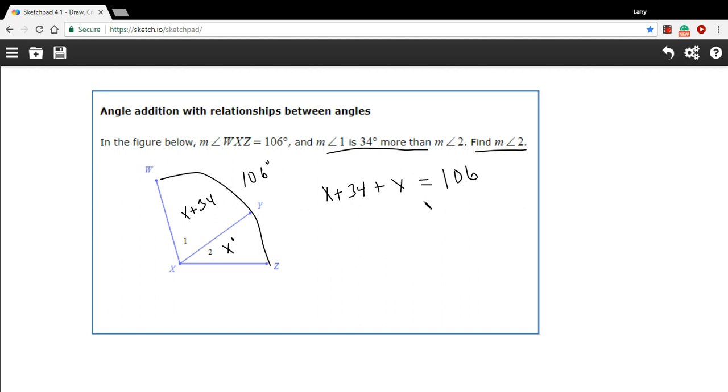Now I can solve for X, and when I do, I'll get the measure of angle 2, and that's exactly what I'm looking for. First, I need to combine the like terms. I have an X and an X, so that makes 2X plus 34 equals 106.